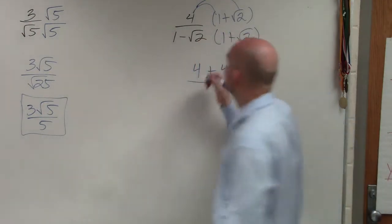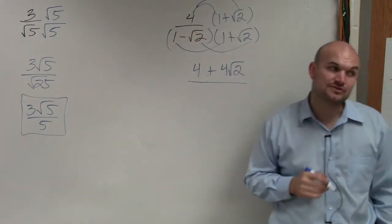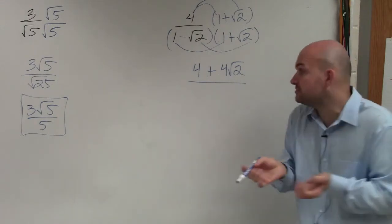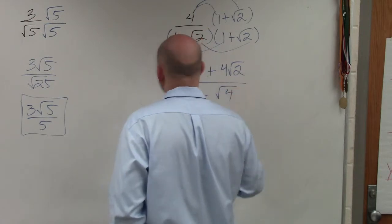And in the denominator, this is the difference of two squares. So I really just need to multiply the first two terms and the last two terms, because the middle terms are going to add to 0. So therefore, I have 1 minus the square root of 4.